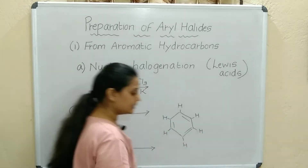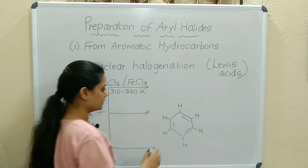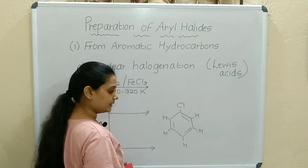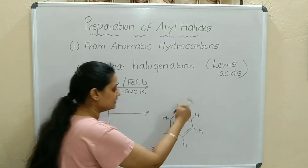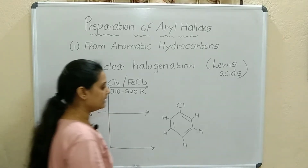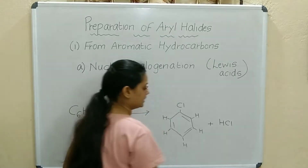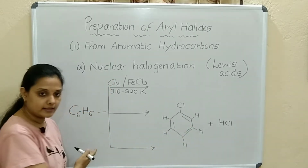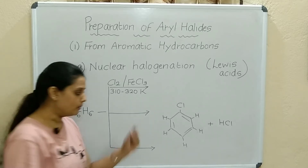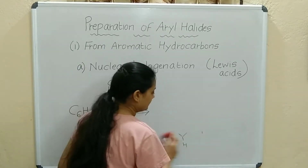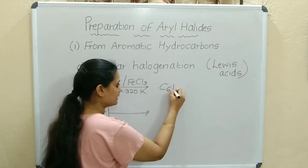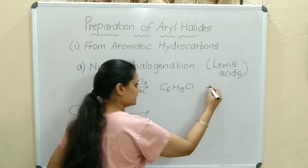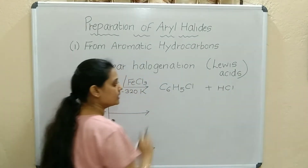You add Cl2 — one chlorine attaches to the benzene ring and the other chlorine forms the byproduct with the hydrogen removed from the ring, giving HCl. The product is C6H5Cl, chlorobenzene, and the byproduct is HCl.